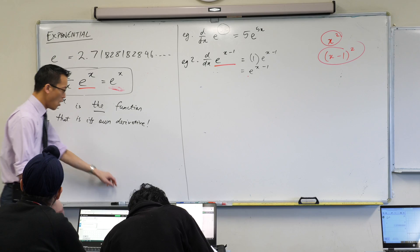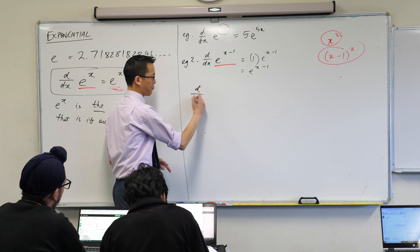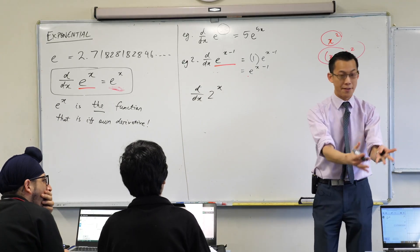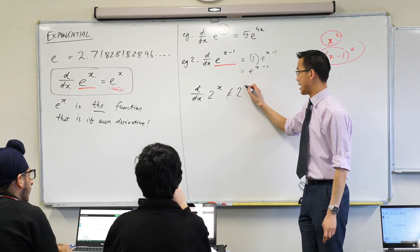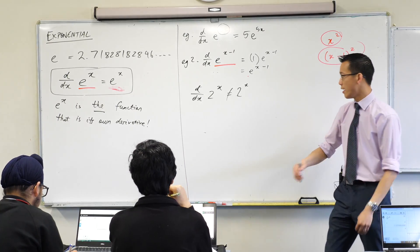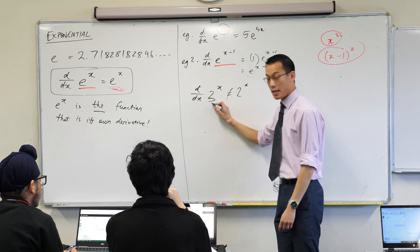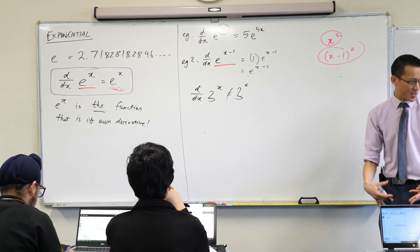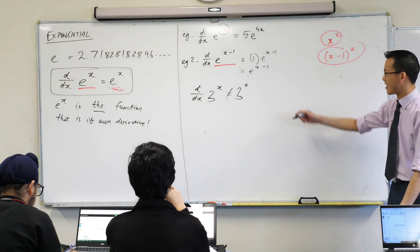We tried those out, right? What is the derivative of something like 2 to the x? We know it's not 2 to the x - that would have been nice, but it was just a bit below. And in the same way, the derivative of 3 to the x was not just 3 to the x.